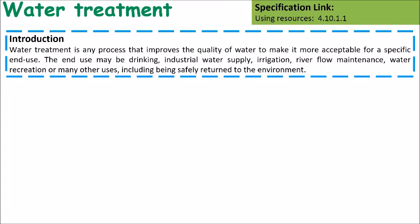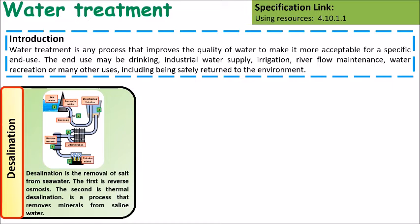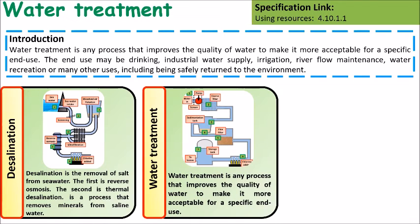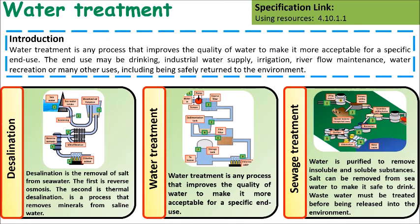Water treatment is a process that improves water quality and makes it possible for us to drink it or for it to be put back into water supplies. Desalination is a process where we remove salt from water. Sewage treatment is the process where we treat waste sewer water and remove harmful materials from it before it can be put back into water supplies.